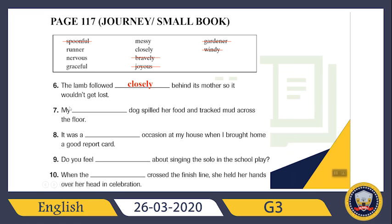What about the seventh sentence? 'My ___ dog spilled her food and tracked mud across the floor.' My messy dog spilled her food and tracked mud across the floor. What about the eighth sentence? 'It was a ___ occasion at my house when I brought home a good report card.' It will be a joyful occasion — because bringing home a good report card is joyful.